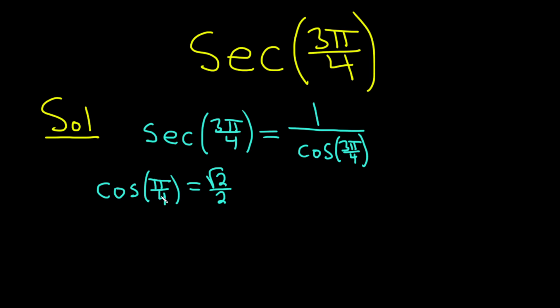Pi over 4 is the reference angle for 3 pi over 4. If you don't know what that is, you can work it out quickly. Here's the angle 3 pi over 4, and then here is the angle pi over 4, this white angle here.